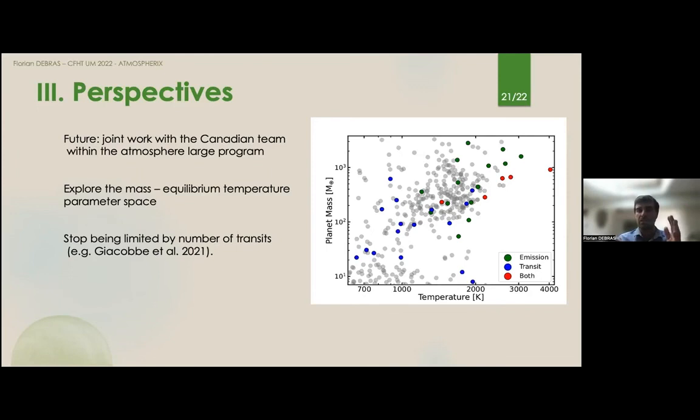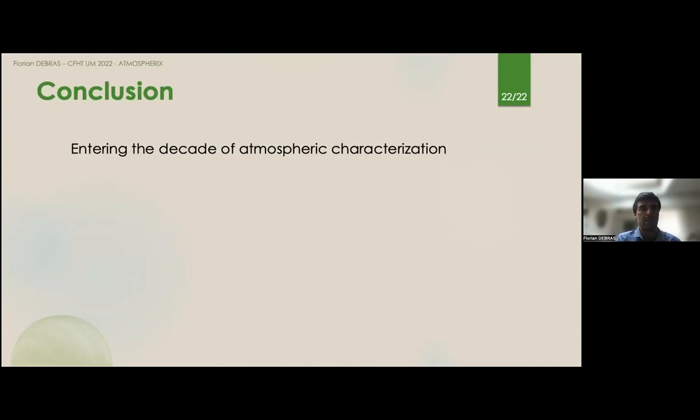What's also very promising for such a work is that we stop being limited by the number of transits, because now we always are at the limit of detection. As Olivia showed as well, if you have not enough transits or just enough, it's not very easy to make a claim. But Giacobbe et al. 2021, for example, on HD209, they had five transits, and with five transits, it's much more than enough to do a very clean detection of all the species in the atmosphere. And this is one of the objectives as well of this program, is to be able to have a lot of transits for all these targets, and to have some very secure claims of atmospheric characterization.